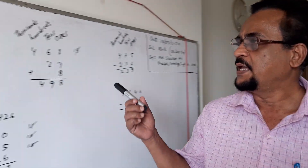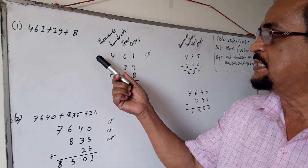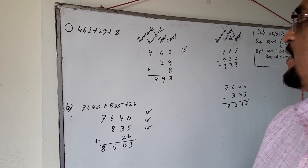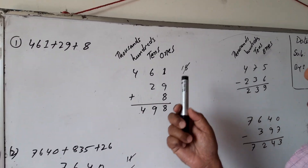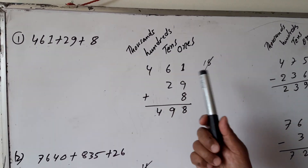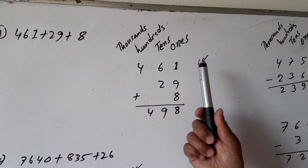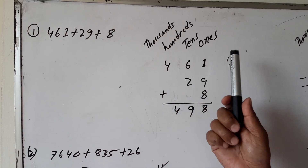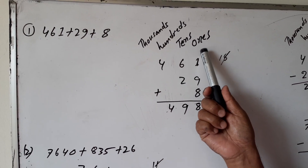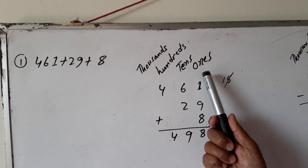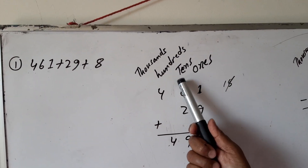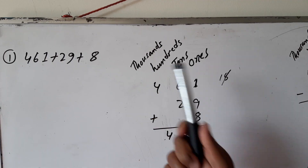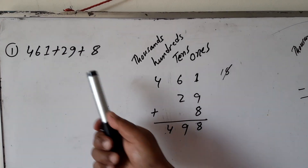I am studying with addition. First, we have to place the numbers. We have to maintain the digits — the 1s digit, 10s, 100s, and 1000s digits.